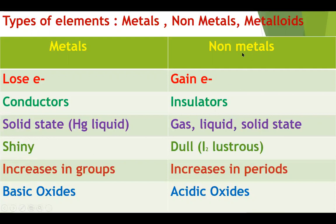Nonmetals are those elements which have a tendency to gain electrons. Because they do not have free electrons to allow the passage of heat and electricity, nonmetals are usually insulators. Nonmetals exist in three states: gas, liquid, and solid. Nonmetals usually have a dull appearance, except iodine — iodine is a nonmetal but still lustrous because of its large size, giving it some metallic characteristics. Nonmetallic character increases from left to right in a period due to the decrease of atomic radius. The most important property is that nonmetals form acidic oxides.